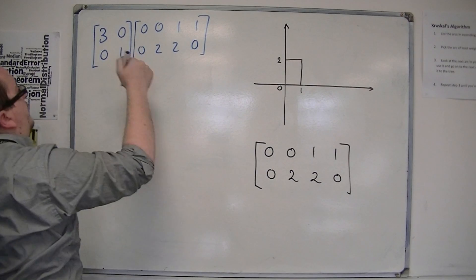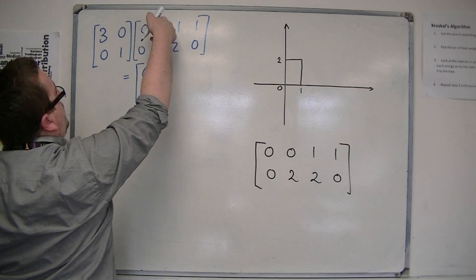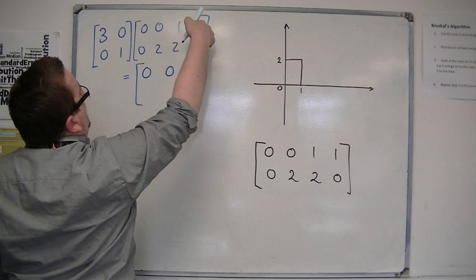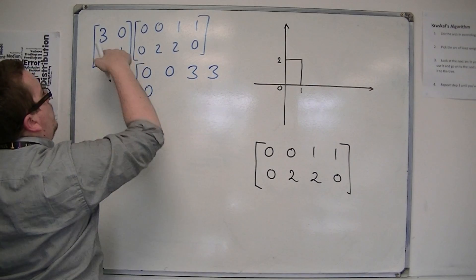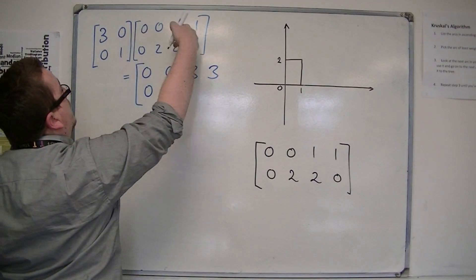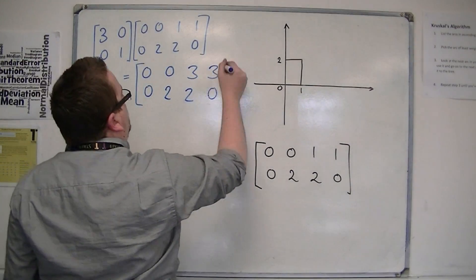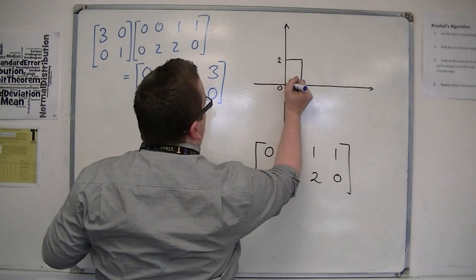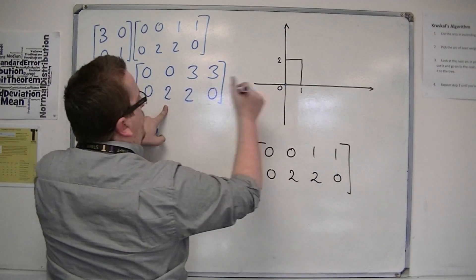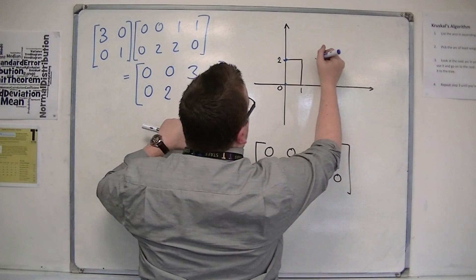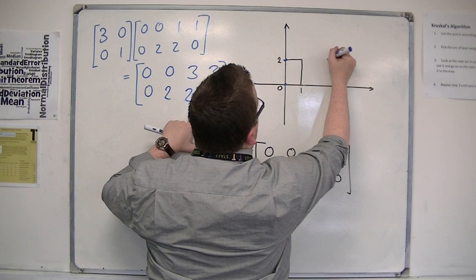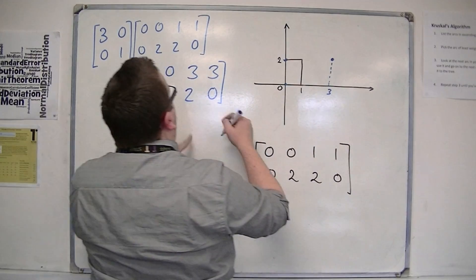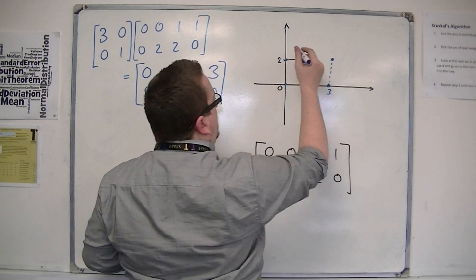So I get [3,0] times each column. That gives me (0,0), then (0,2), then (3,2), and (3,0). So I've now got coordinates: (0,0), (0,2), (3,2) — so that's all the way over here — and (3,0).